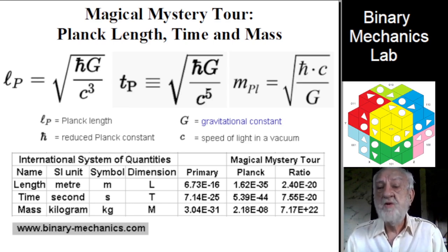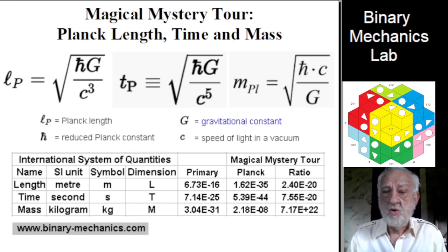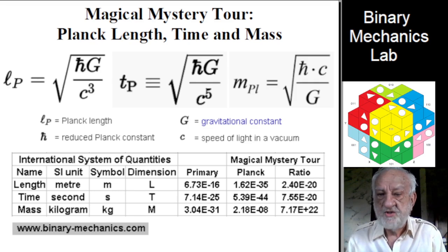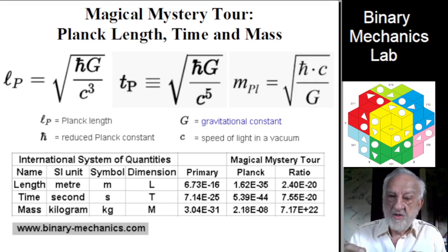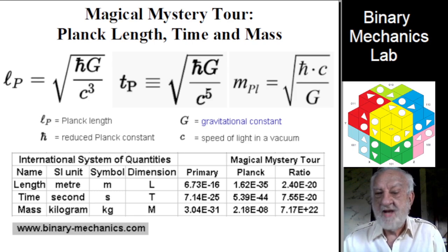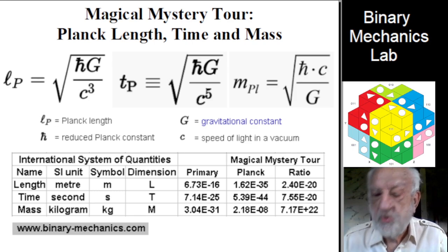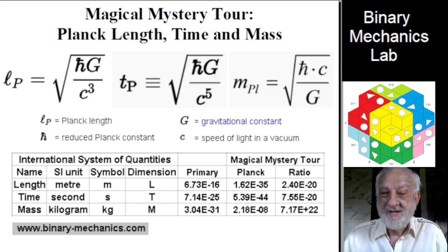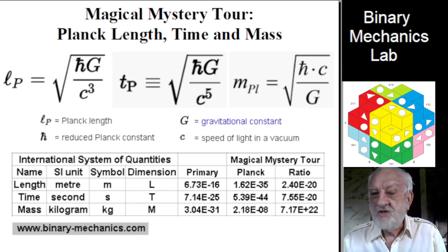Prior to binary mechanics, h and c were unexplained observations. The table shows the primary constants of binary mechanics, which are the basis for h and c. In summary, the Planck limits are a sort of magical mystery tour because they are merely combinations of unexplained observations, and there is no consistency.